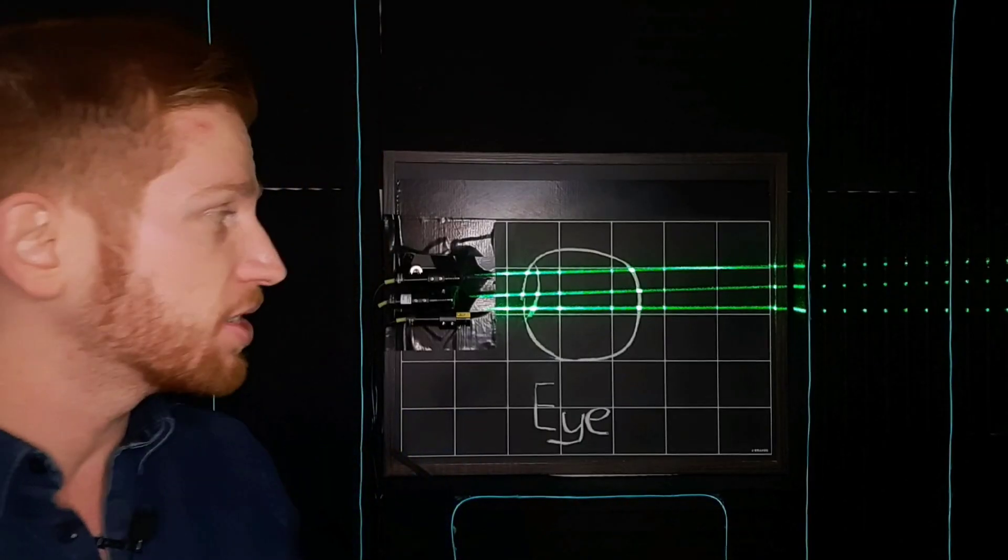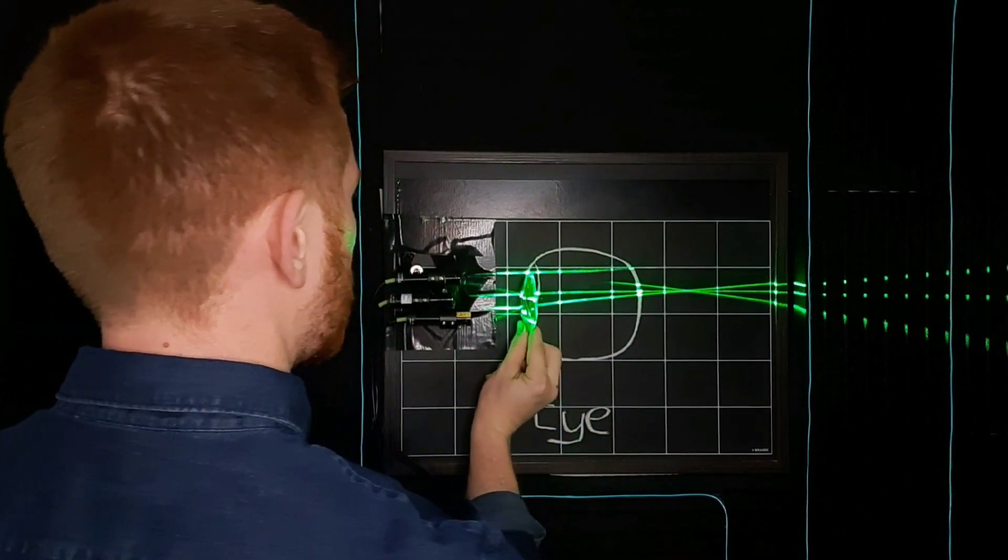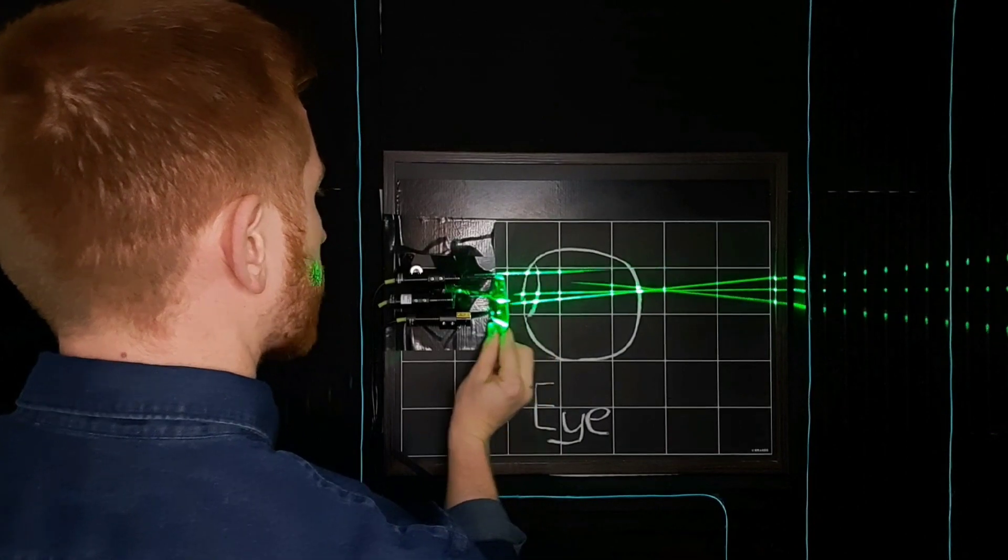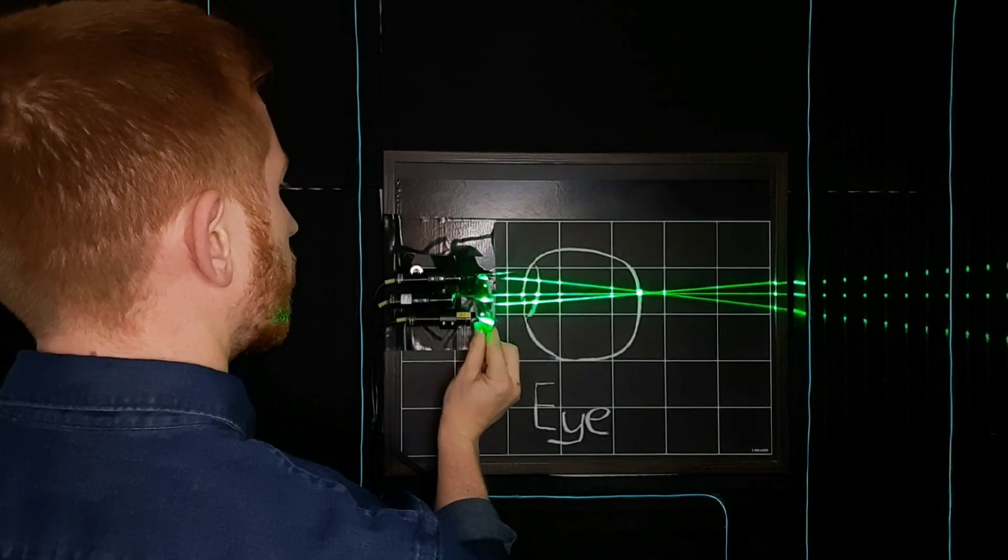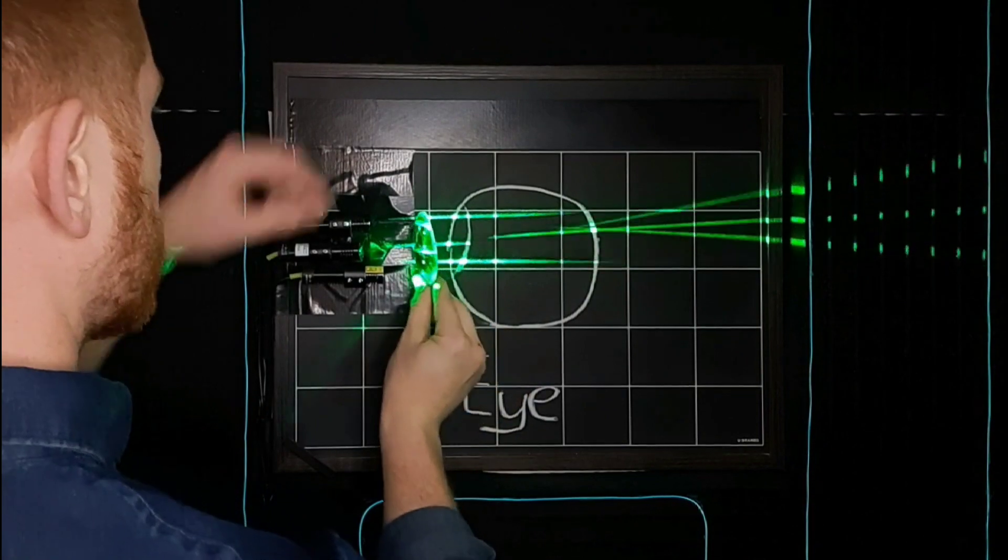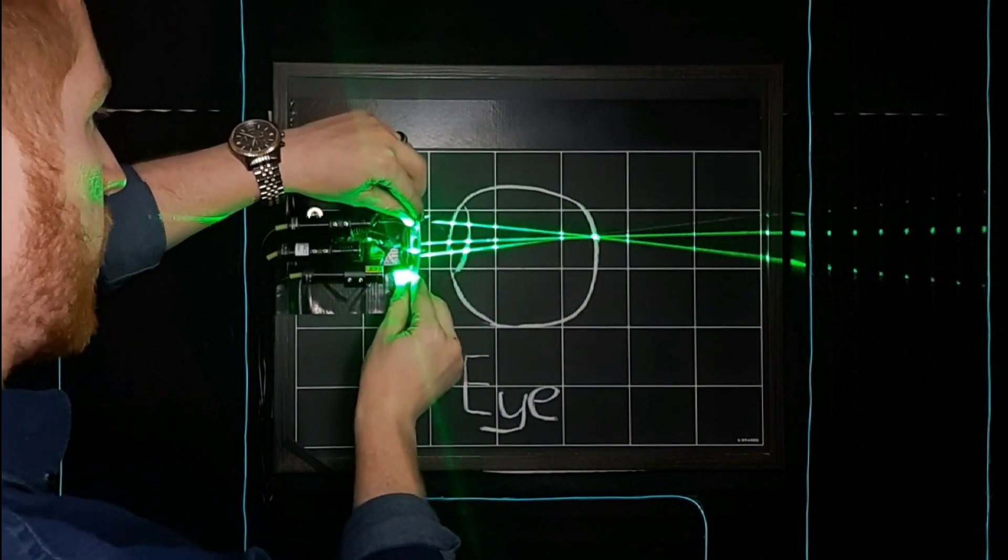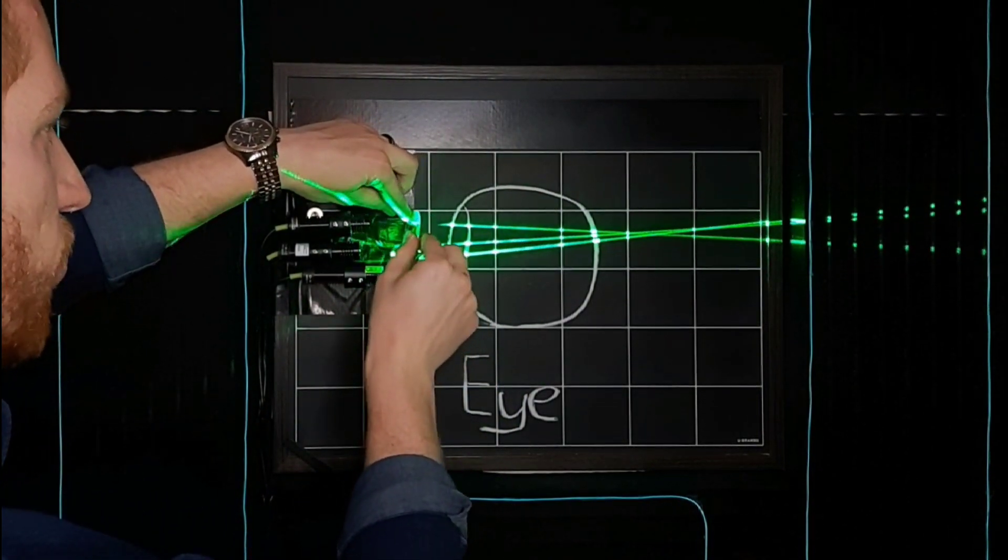So if you have astigmatism, your eyes may be farsighted in one direction while having normal vision in the other, and the glasses for astigmatism therefore need to correct light differently in different directions.